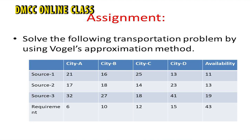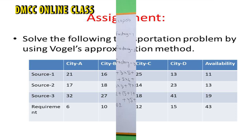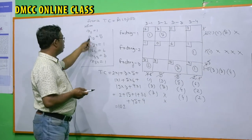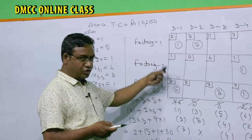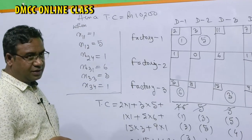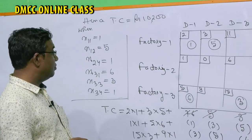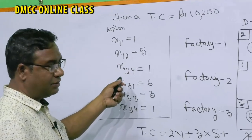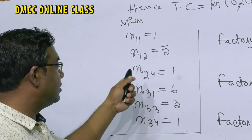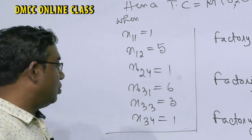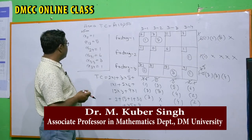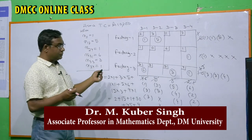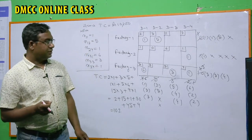Now we have to test whether this solution is optimal or not. If it is not optimal, we have to take further iterations using the UV method or MODI method. If it is optimal, this is the final solution. The optimality test will be covered in the next class using the UV method. Today let us stop here — thank you.